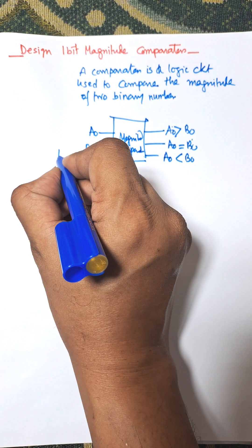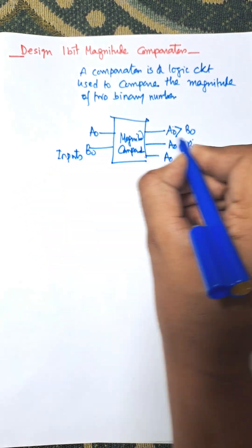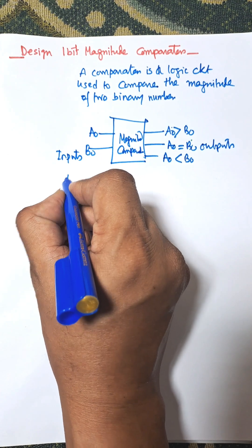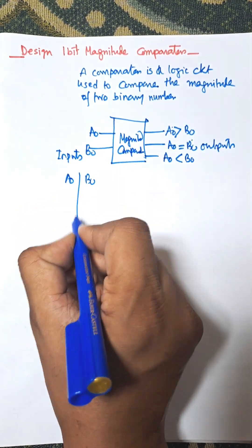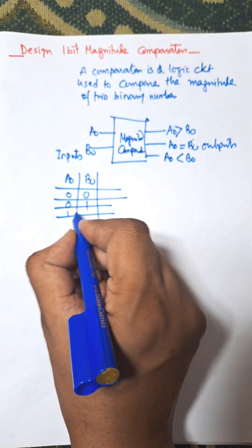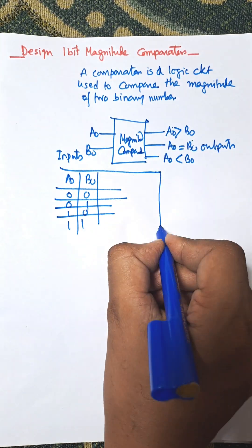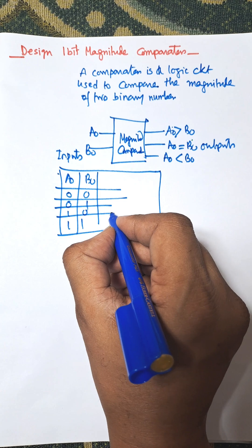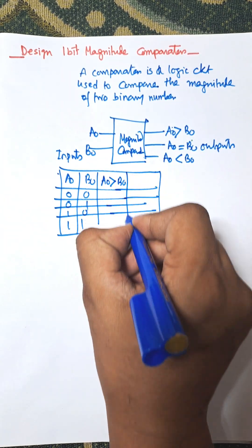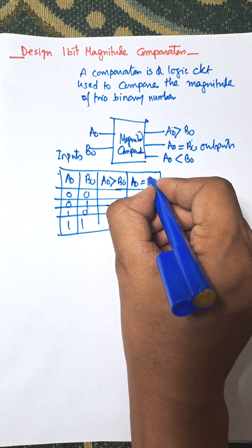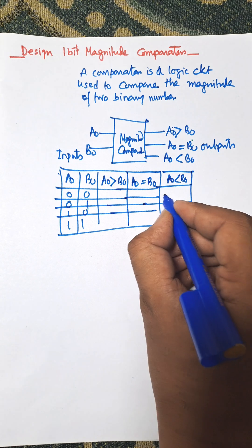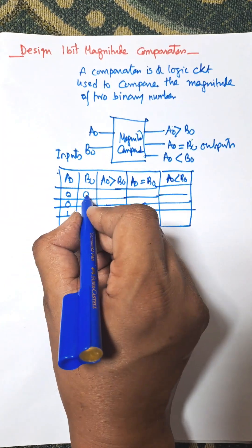So there are three outputs. These are the inputs and these are the outputs. Now for the truth table, the inputs are a0 and b0, and there are four combinations: 0-0, 0-1, 1-0, and 1-1. Depending on the input combination, we need to find the output for each of the three possible outputs: a0 greater than b0, a0 equal to b0, or a0 less than b0.